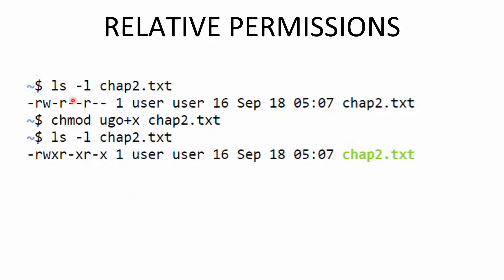In another example, this is the permission associated with the file. We want to give execute permission for all the users because the users do not have execute permission. So we mention user, group, and others, and execute permission must be given, so it is plus x. You can then check the attributes of the file to know whether the permission has been granted. Execute permission is granted to all the users.